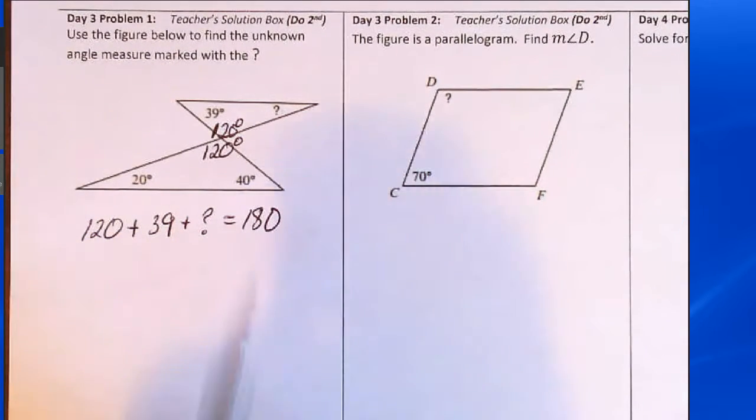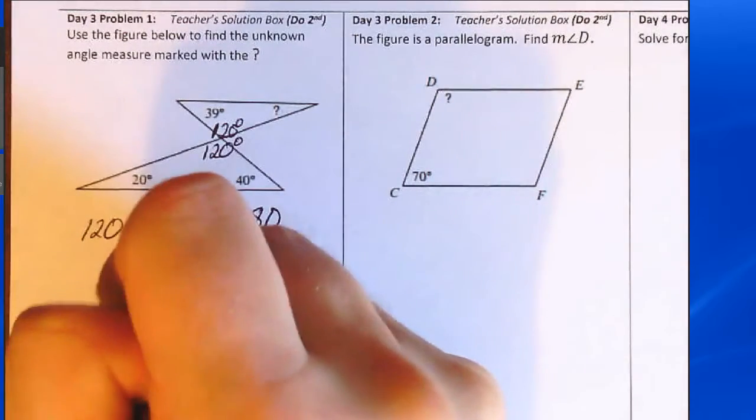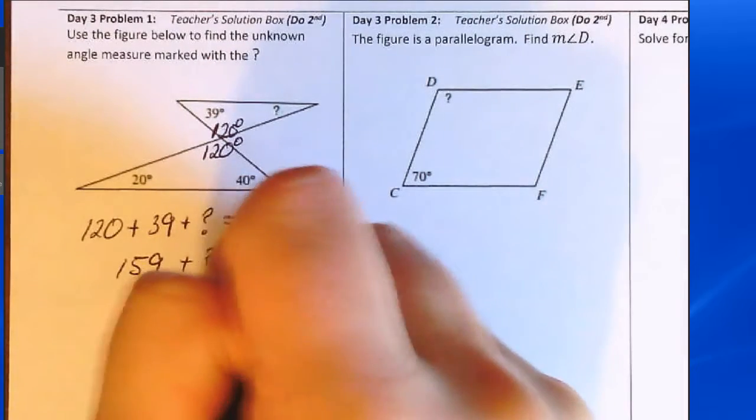We can solve this equation to find the answer for the question mark. 120 plus 39 is 159 degrees plus the question mark is equal to 180.